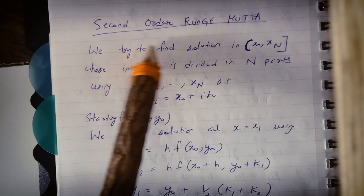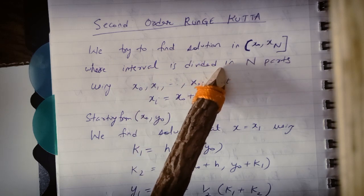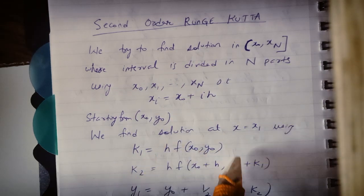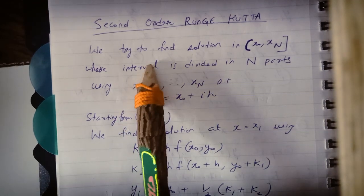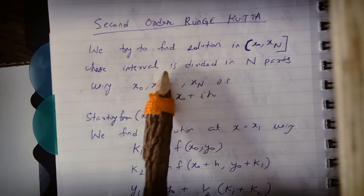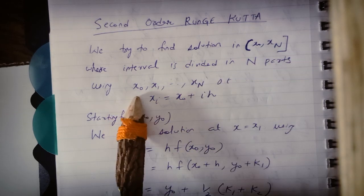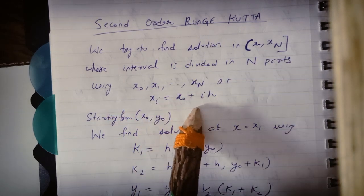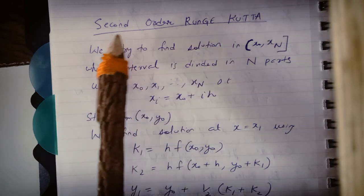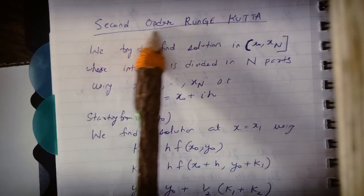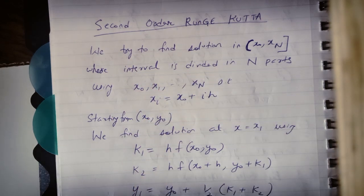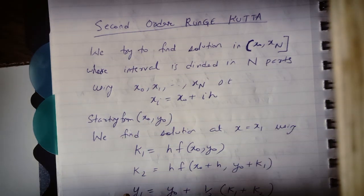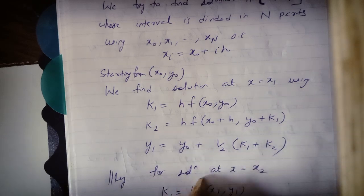Now I am discussing the second order Runge-Kutta method. So again, what we have to solve? We have to solve the first order differential equation which has an initial value problem. We will divide interval x0 to xn into equal parts with width h such that x_i equals x0 plus i*h. So there is a series of formulas. The formulas are very easy but you have to learn them carefully.